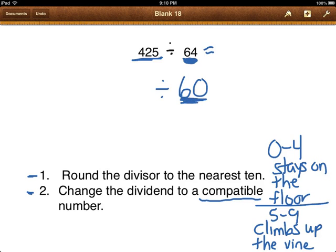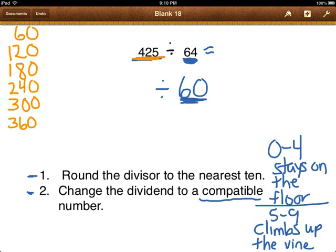Since I'm working with 60, I'm going to make a list of multiples of 60. And when I get somewhere around 425, I'll stop. So 60 times 1 would be 60. 60 times 2, 120. 60 times 3, 180. 60 times 4, 240. 60 times 5, 300. 60 times 6, 360. 60 times 7, 420. Oh, stop. Look at that. 420, 425. That's really close. So I'm going to change the dividend to 420.